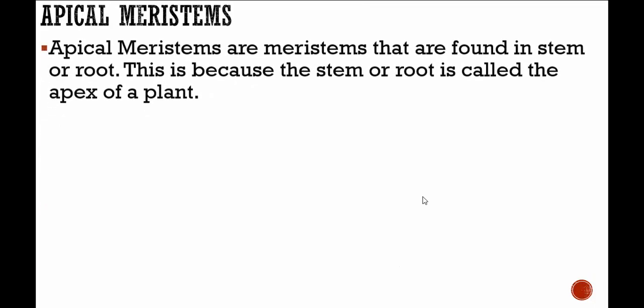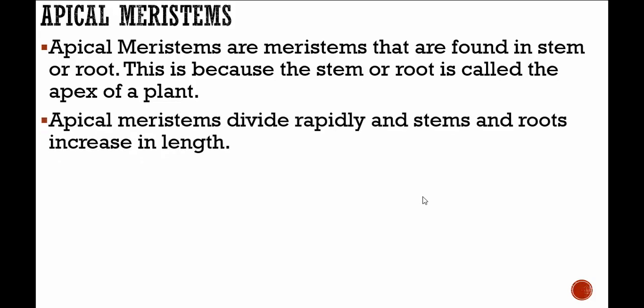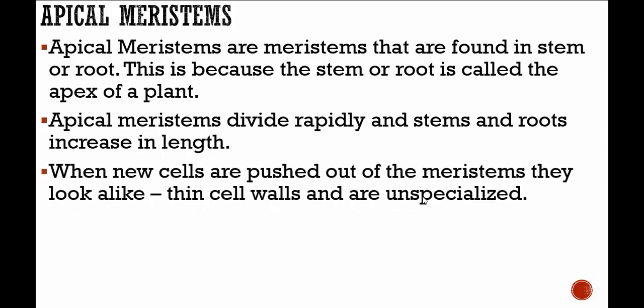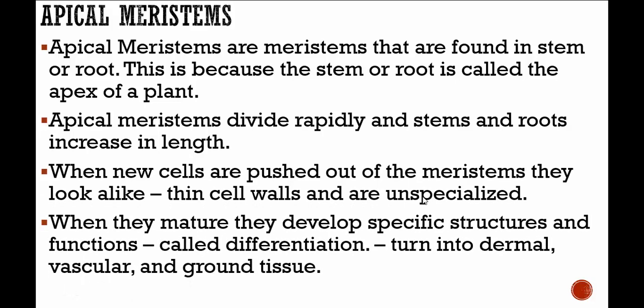Apical meristems are found at the stem or root, called the apex of a plant. Apical meristems divide rapidly, causing stems and roots to increase in length. When new cells are pushed out of the meristems, they look alike — thin cell walls and unspecialized. When they mature, they develop specific structures and functions through differentiation, and they can turn into dermal, vascular, or ground tissue.